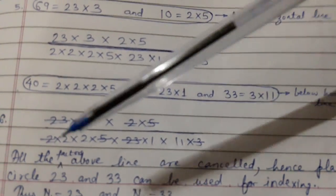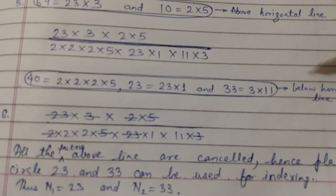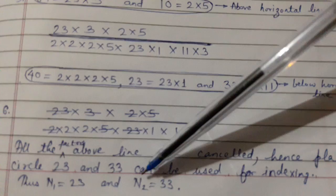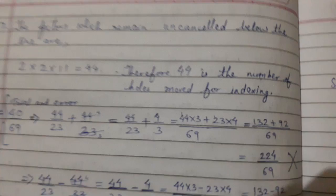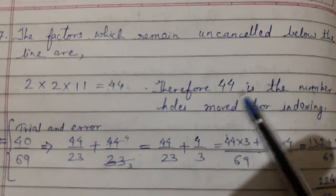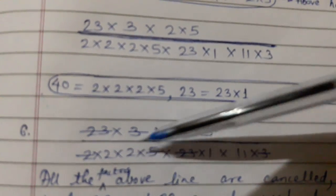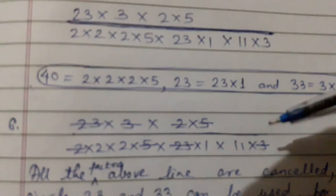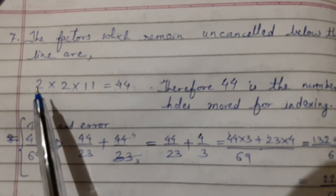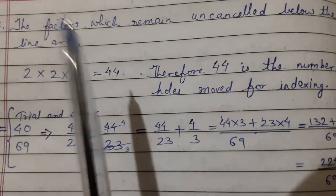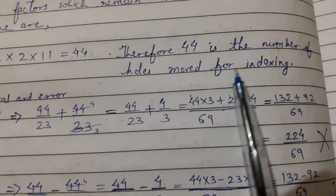All the above factors are canceled now, which shows that our choice 23 and 33 can be used for indexing. So now capital N1 is 23 and capital N2 is 33. Now the factors which remain uncancelled below the lines, if you see here there are few factors which are uncancelled like 2, 2, 1, and 11. So we have to multiply that: 2 into 2 into 11 into 1, which came 44. So now 44 is the number of holes moved for indexing.